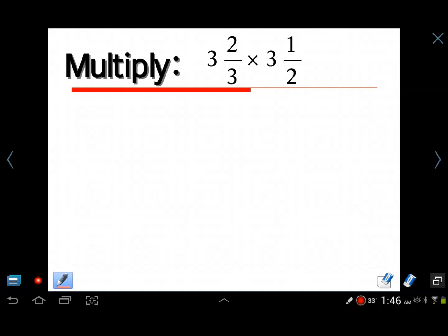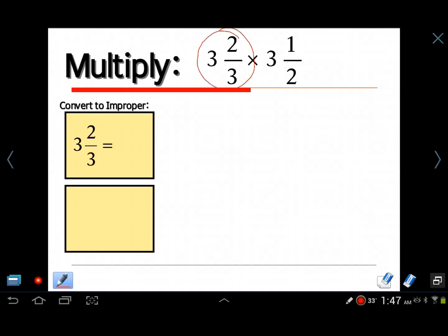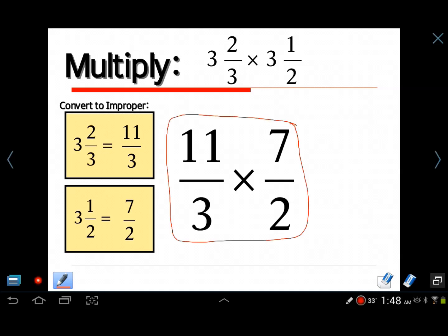The first step is to change these mixed numbers into improper fractions. One thing that you might have forgotten how to do is how to change a mixed number into an improper fraction. So what we have is 3 and 2 thirds. What you do is you start out with the 3 and the 3 and you multiply them. What's 3 times 3? It's 9. And then add 2 to that. So what's 9 plus 2? 11. You get 11 thirds. That's your improper fraction, 11 thirds. Now let's go ahead and change the other one, 3 and a half. Just do 2 times 3. 2 times 3 is 6, not 5. 6 plus 1 is 7. So now you have 3 and a half equals 7 halves. Now we're going to rewrite the problem using improper fractions instead of these mixed numbers. We do not want to do the problem like this anymore. That way is not going to work. This way will work now that we have improper fractions in there.